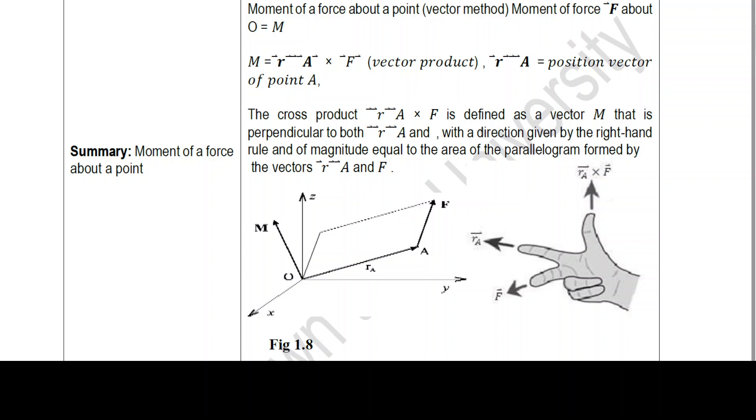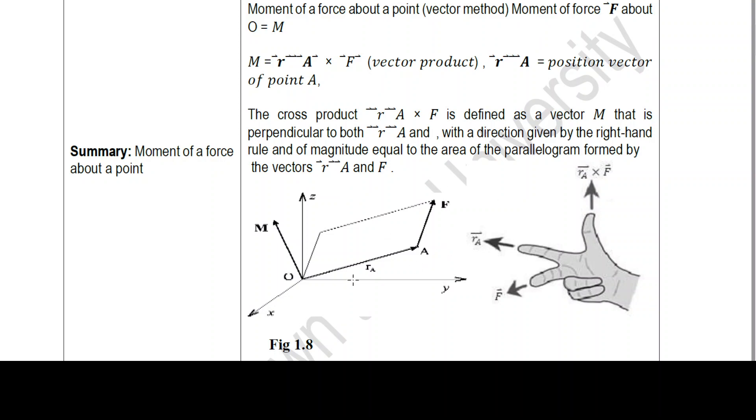The magnitude is equal to the area of the parallelogram formed by the vectors R_A and F. Now look in the diagram, if you see R_A and F, so R_A and F, these are the two vectors.